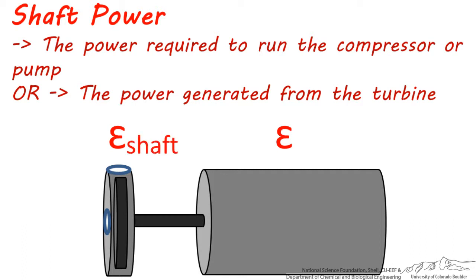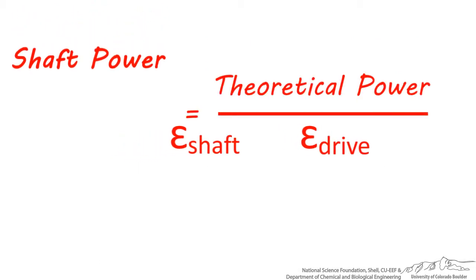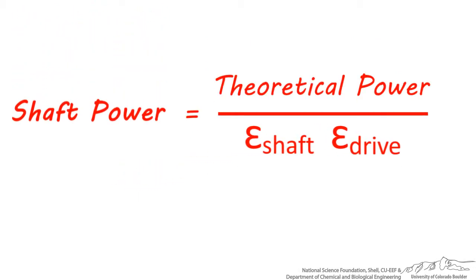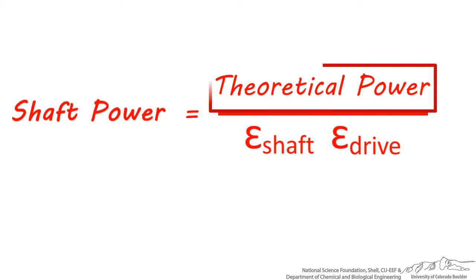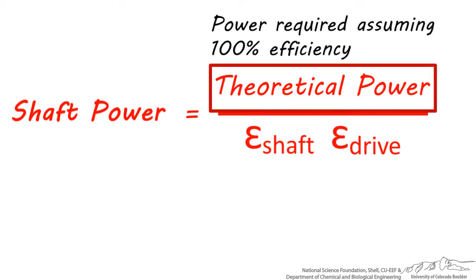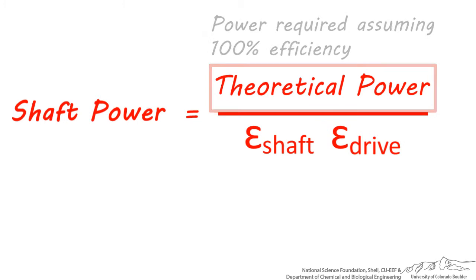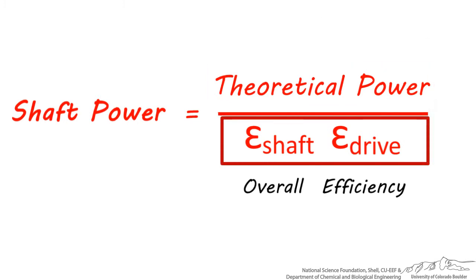The compressor or pump has a shaft efficiency, and the motor has a drive efficiency. These are both important in calculating the shaft power, which is the theoretical power divided by the shaft efficiency times the drive efficiency. The theoretical power is the power required to run this piece of equipment assuming both the pump or compressor and the drive are 100% efficient. This combination of shaft and drive efficiency is considered the overall efficiency for the piece of equipment.